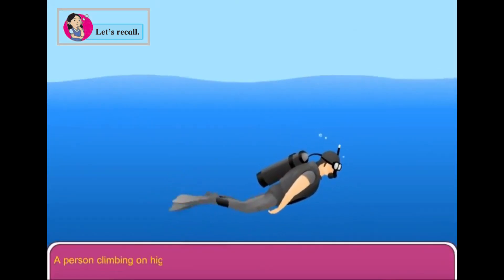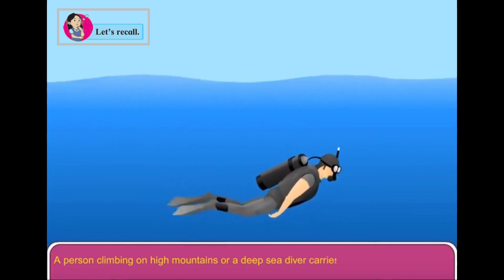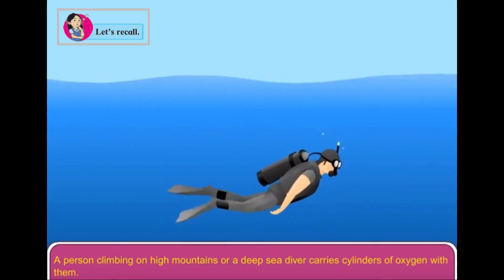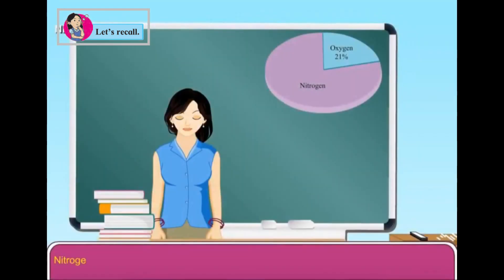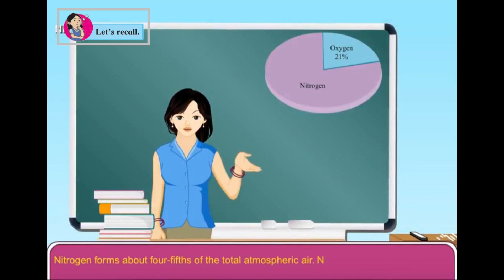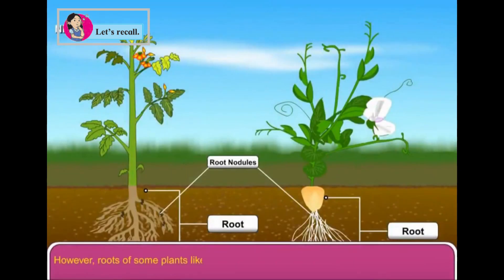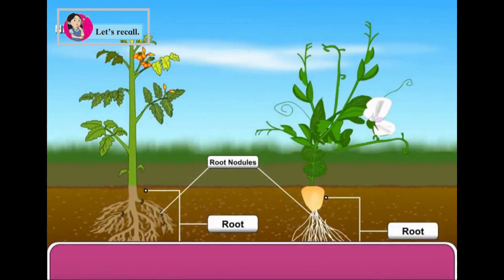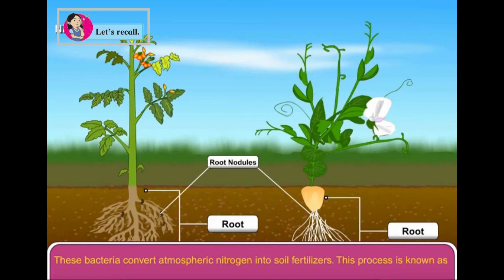A person climbing high mountains or a deep sea diver carries cylinders of oxygen with them. Nitrogen forms about four-fifths of the total atmospheric air. Nitrogen does not help in burning. However, roots of some plants like bean, pea and pulses have root nodules that bear some bacterial cells. These bacteria convert atmospheric nitrogen into soil fertilizers. This process is known as biological nitrogen fixation.